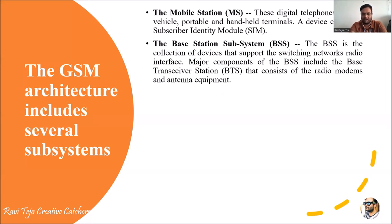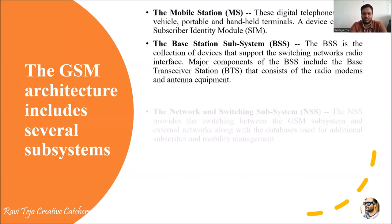A particular antenna is installed in the base station such that signals are transmitted to and received from mobile stations. The Base Station Subsystem (BSS) contains BTS — Base Transceiver Stations — which have several hardware components like radio modems and other equipment for the transceiving mechanisms.